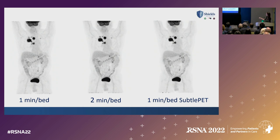You can see all of the graininess in the liver and throughout the scan in the unprocessed image, and it is not noticed at all on the enhanced SubtlePET image — which is diagnostically equivalent or, one could argue, better quality than our standard protocol.